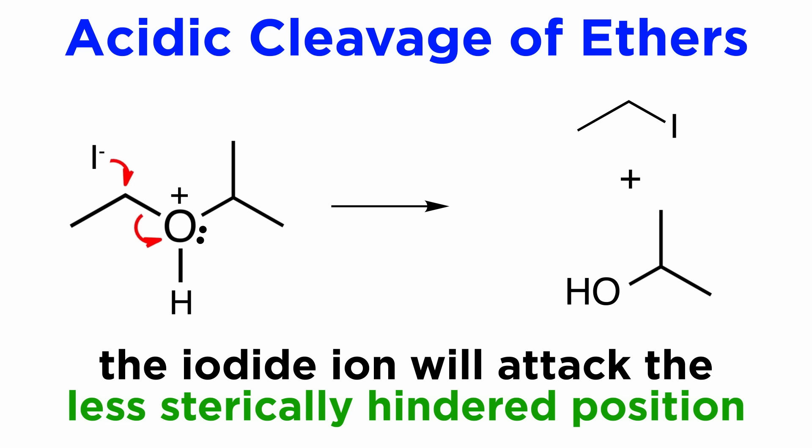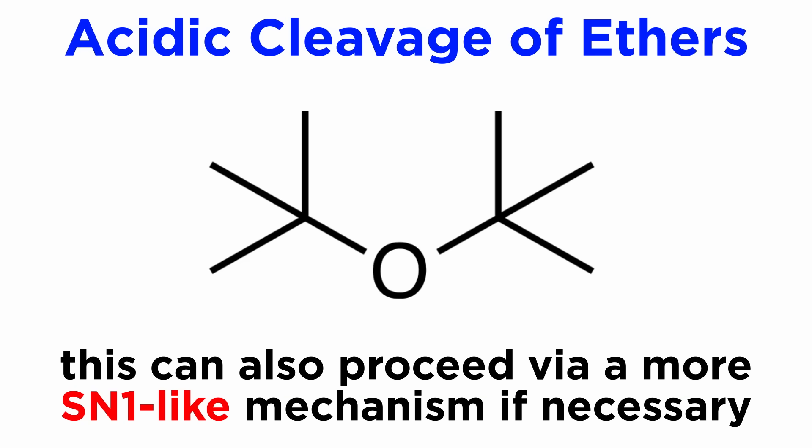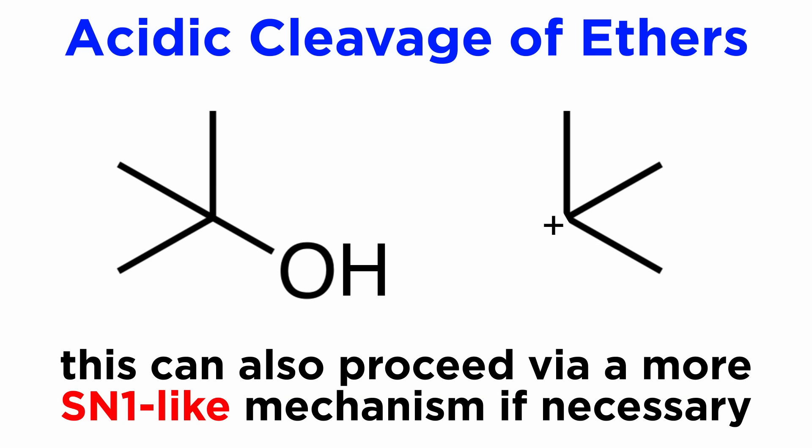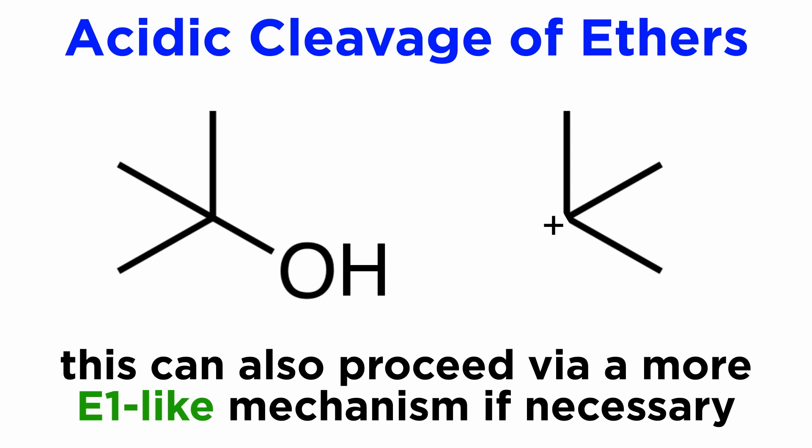So we must keep steric factors in mind when determining how an ether might cleave. Additionally, this will not always occur via an SN2 mechanism. If a carbocation intermediate is favorable due to sufficient substitution on the alkyl groups, like tert-butyl groups, an SN1 pathway is also possible. In such a situation, E1 is also possible; it will simply depend on the precise starting material and conditions like temperature.